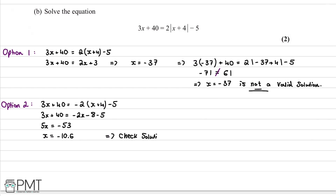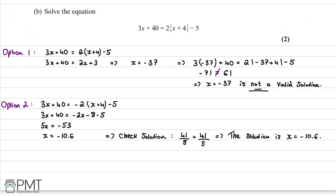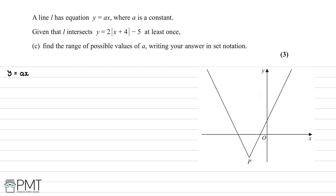Dividing -53 by 5 gives x = -10.6. We check this solution by substituting back in and find that 41/5 = 41/5, which is true. We therefore conclude that x = -10.6 is the valid solution. We pick up the first mark for reaching a value of x and the second mark for concluding it is a valid solution.